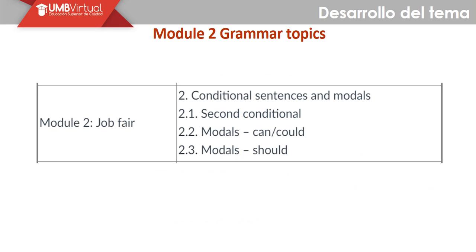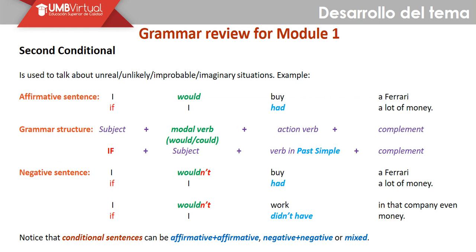So conditional sentences — second conditional. We're going to start with the grammar part. Aquí tenemos una explicación gramatical. Es importante que ustedes puedan ver la estructura, el orden en el que debemos colocar las palabras. So when do we use the second conditional? We mentioned before that we use this topic to talk about unreal, likely, improbable, imaginary situations. We are going to read the following examples.